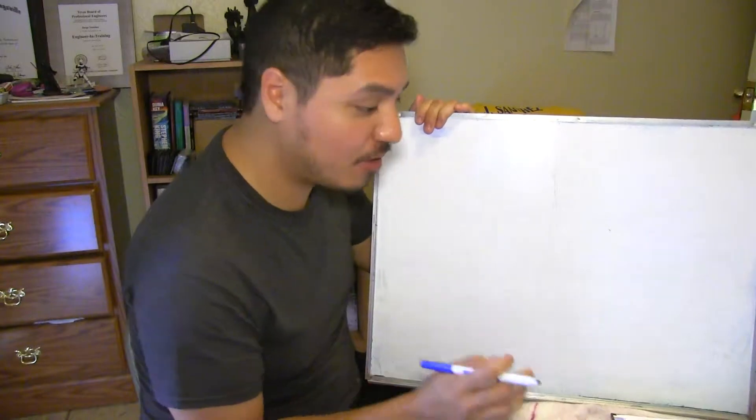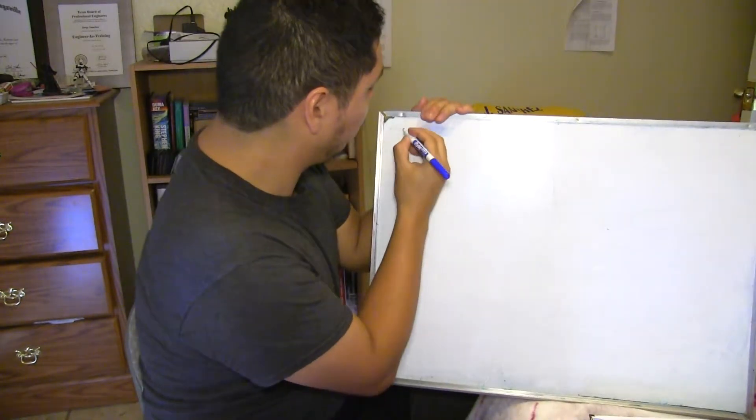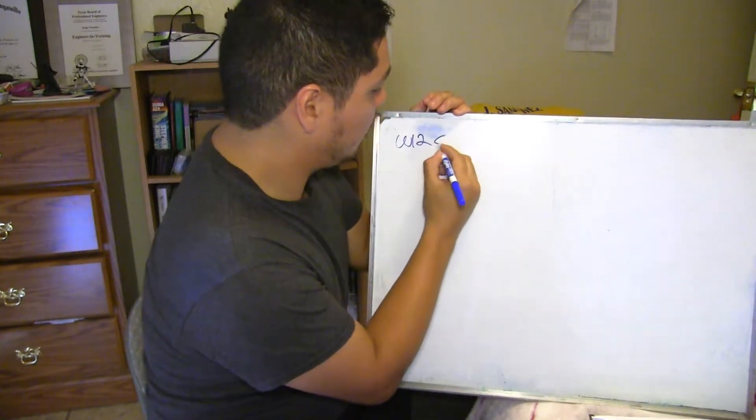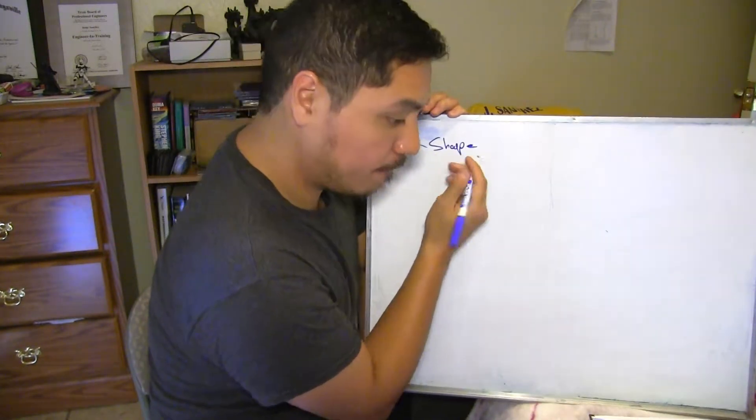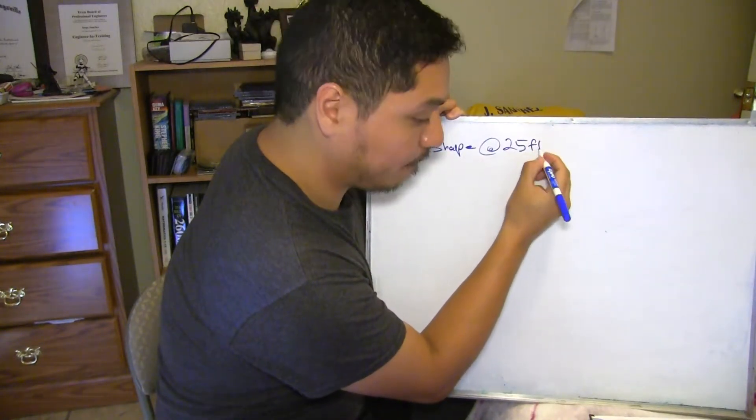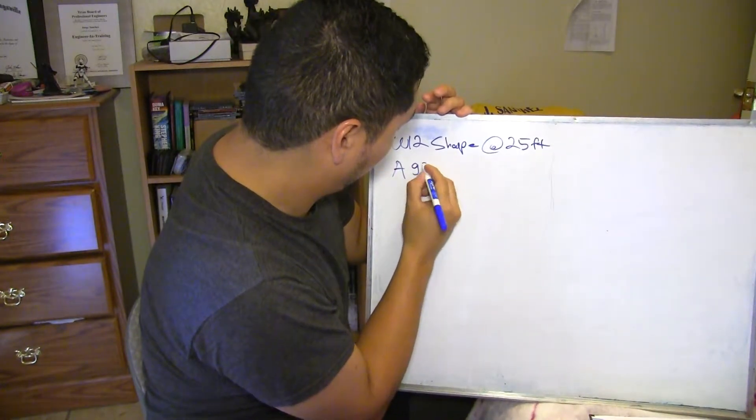Now let me give you the parameters. So basically we need to choose a W12 shape for a 20 foot span, and the type of steel we're going to be using is going to be A992.